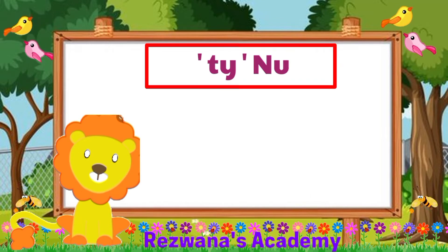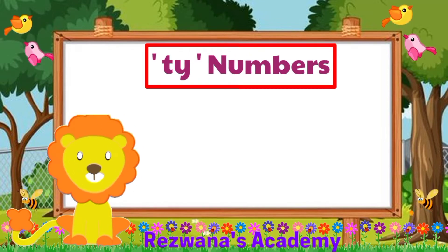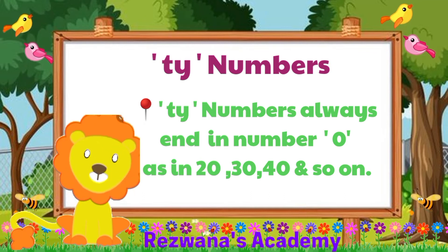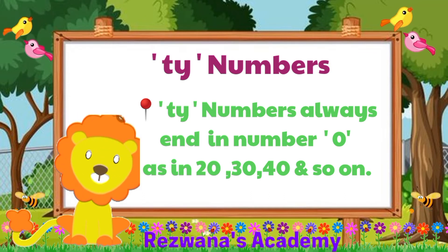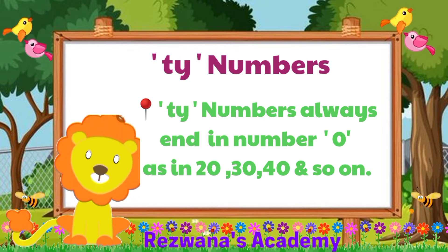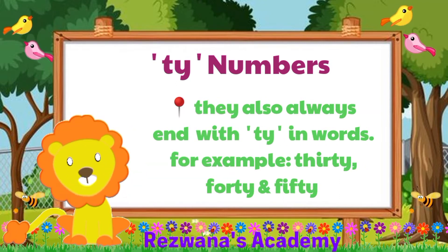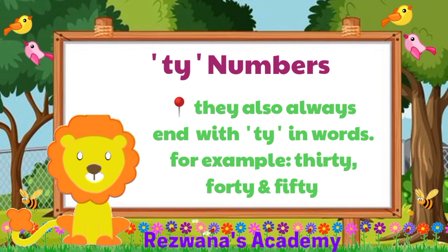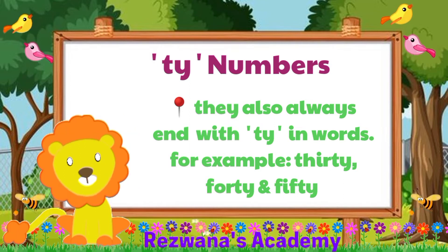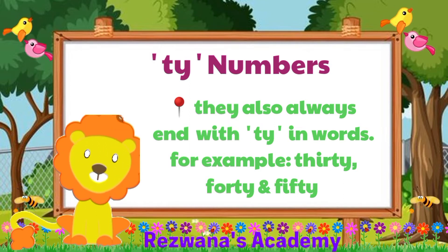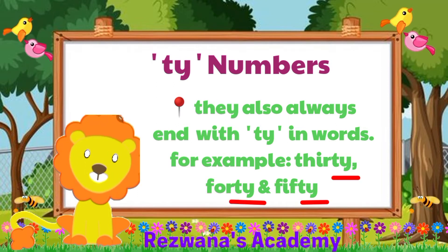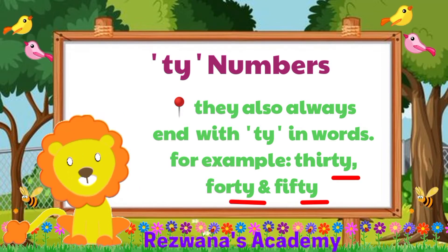Now let's talk about T numbers. T numbers always end in number 0, as in 20, 30, 40 and so on. They also always end with TY in words, for example 30, 40 and 50. As you can see, all these number names have TY at the end.